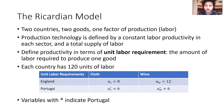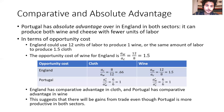One thing we can see right away is that Portugal has the absolute advantage in both sectors—it takes fewer units of labor to make cloth and wine there. Portugal is just more productive overall. However, even though Portugal has the absolute advantage in both sectors, there are still gains from trade because there are differences in opportunity costs, and that's what generates comparative advantage.